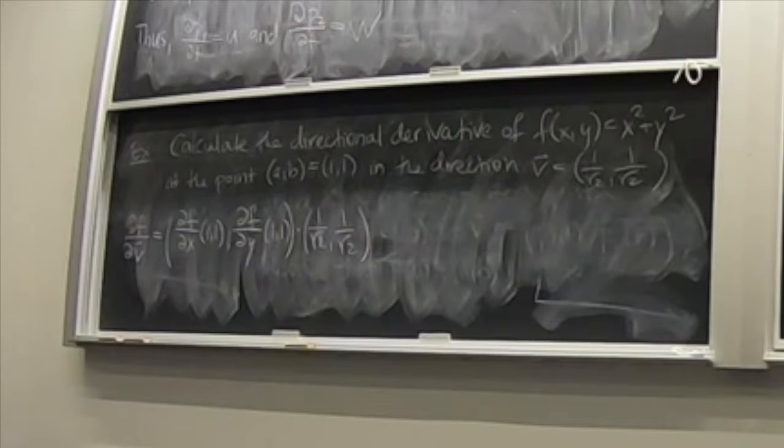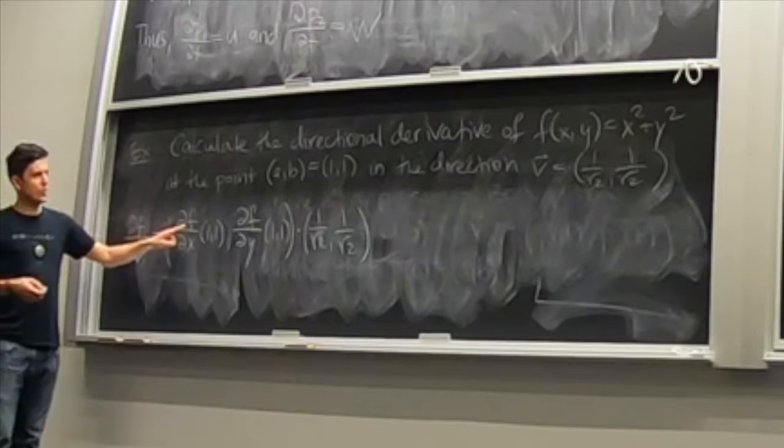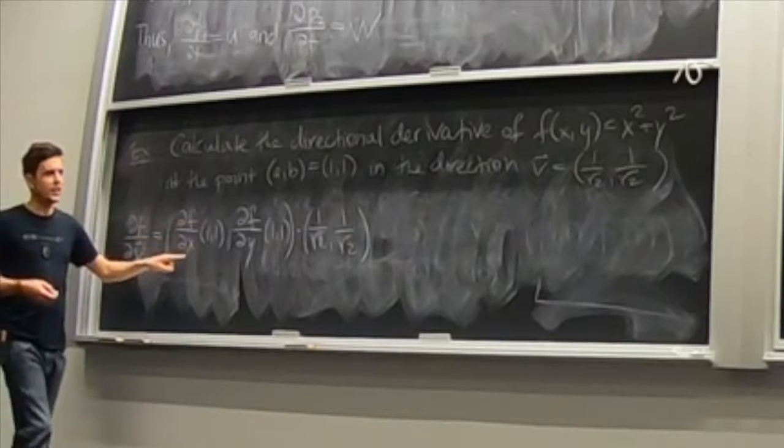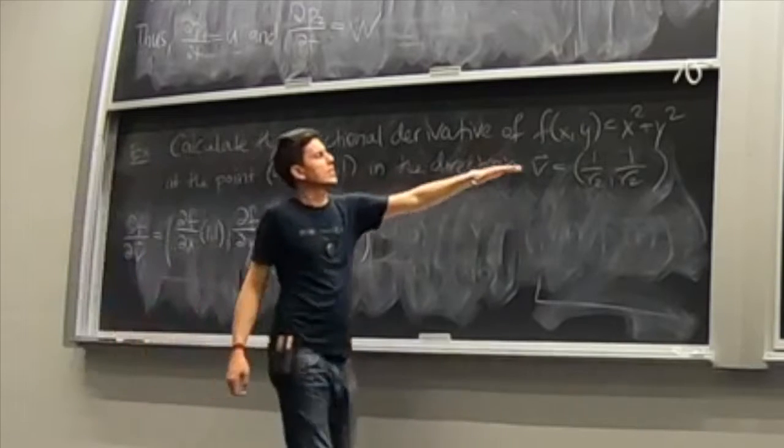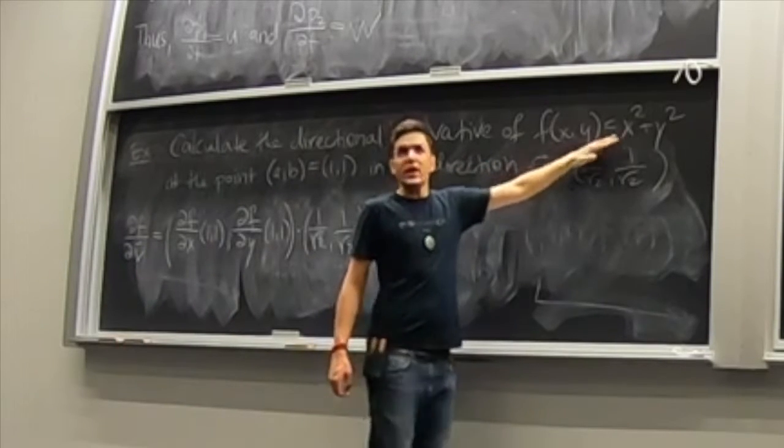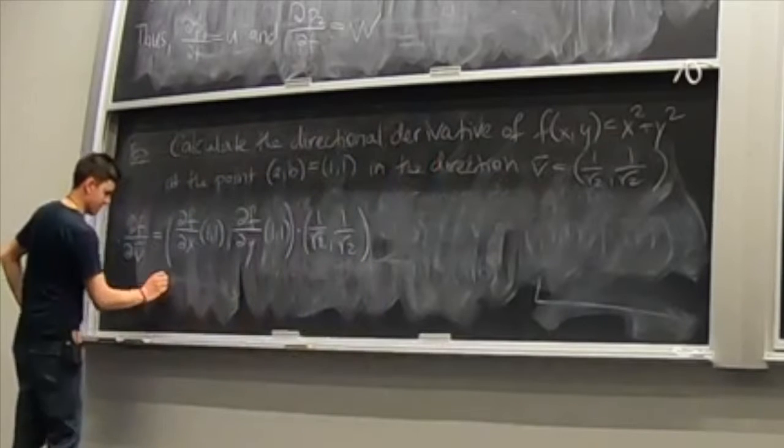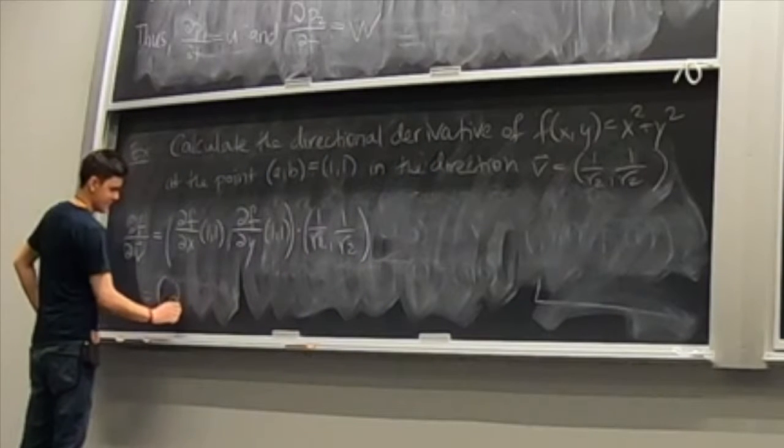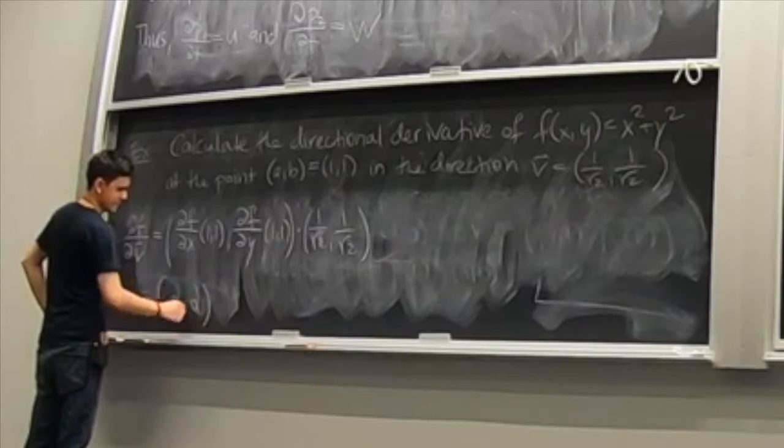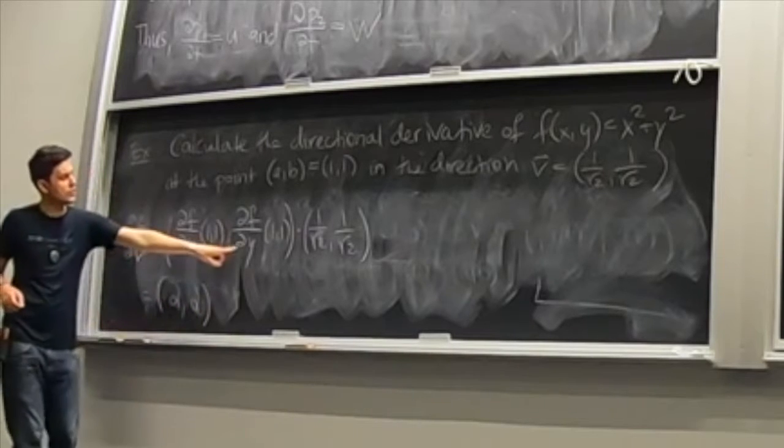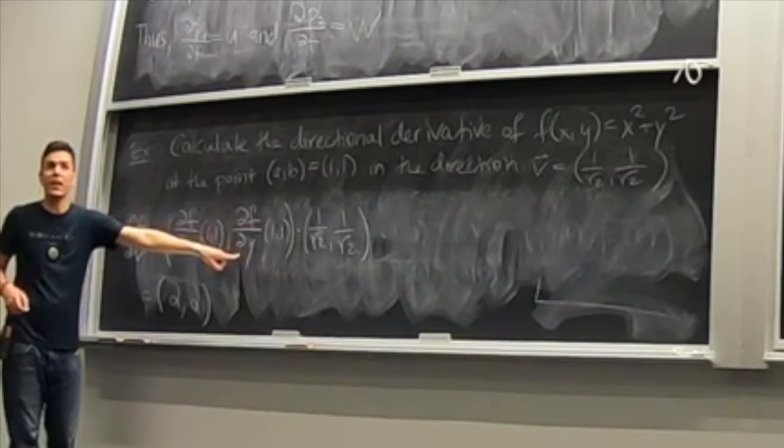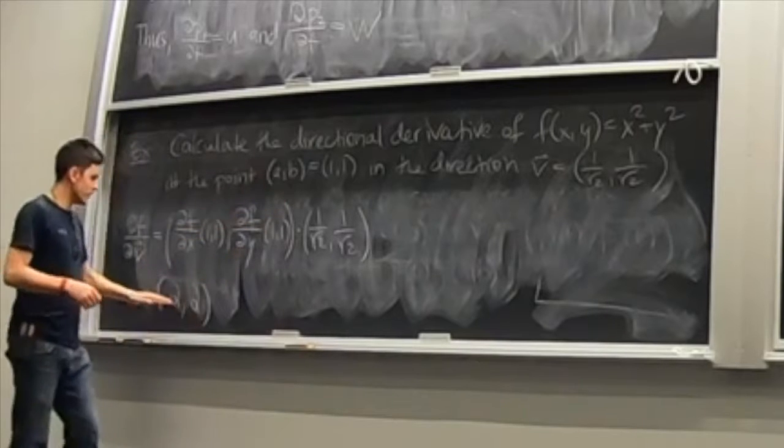Okay, so the partial derivative df/dx of this function will be 2x, and the partial derivative df/dy will be 2y. We plug in our point, we get 2, 2.